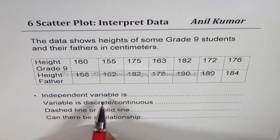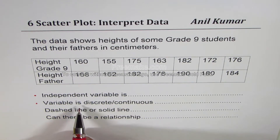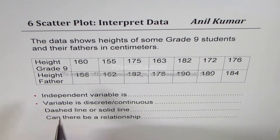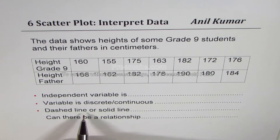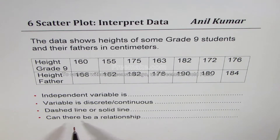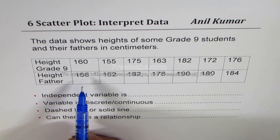The first question is: what is the independent variable in this data? Second, is the variable discrete or continuous? Third, based on that, when you draw the line of best fit, should you draw a solid line or a dashed line? And the last question is: can there be a relationship?